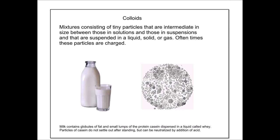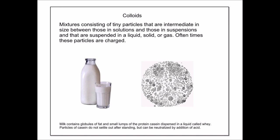Now, I should mention there's a third kind of mixture that you might see, and that's called a colloid. Colloids are mixtures consisting of tiny particles that are intermediate in size between those in solutions and those in suspensions. Oftentimes, those particles are charged, and the charge in those particles allows the relatively large particles of a colloid to stay suspended or to stay mixed throughout the solvent. Milk is a really good example of a colloid. Milk contains globules of fat and protein called casein dispersed in a liquid called whey. The casein doesn't settle out, but it might be neutralized by the addition of an acid, and that would allow some large particles to form.